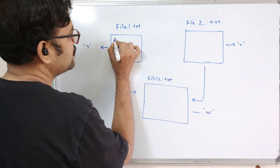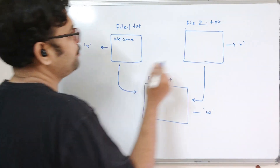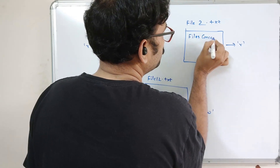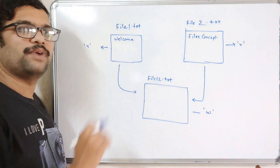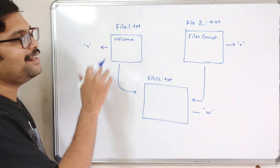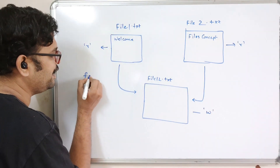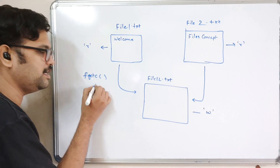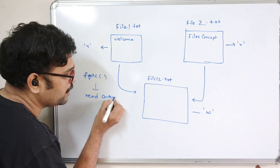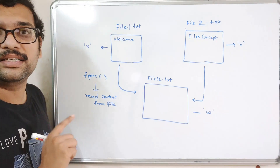For example, file1 contains 'welcome' and file2 contains 'files concept'. This is the content already available in file1 and file2. To read the contents of any file, we use a function called fgetc. We use fgetc to read content from the file — it reads a single character at a time.